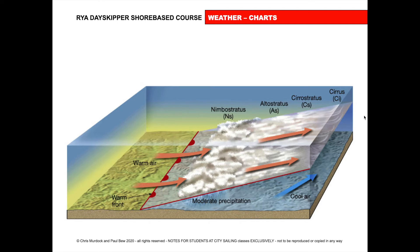So we see the high wispy clouds called the cirrus. Then we get the cirrostratus. Cirro means high. Stratus means layered, so we get high layered. Alto means middle. Stratus means layered, so we get middle layered. Then we get nimbostratus — layered clouds. And we'll get rain. The rain will generally happen about 200 miles from the front on the land. So we'll see a small amount of rain and it'll build up and build up. It's one of those days where it doesn't seem that it's raining much, but it gets you quite wet.